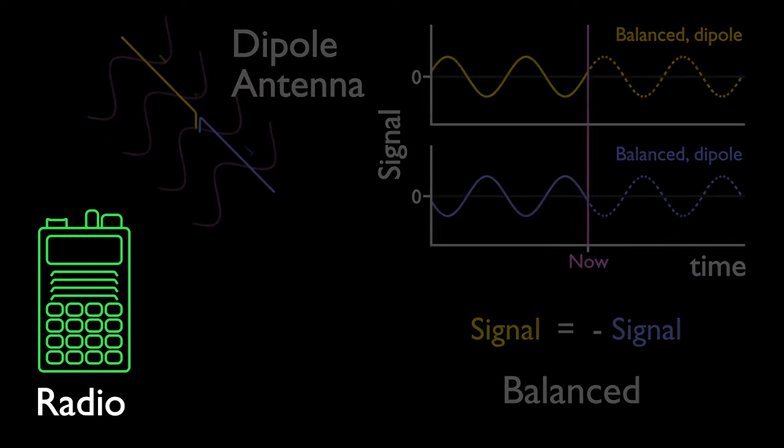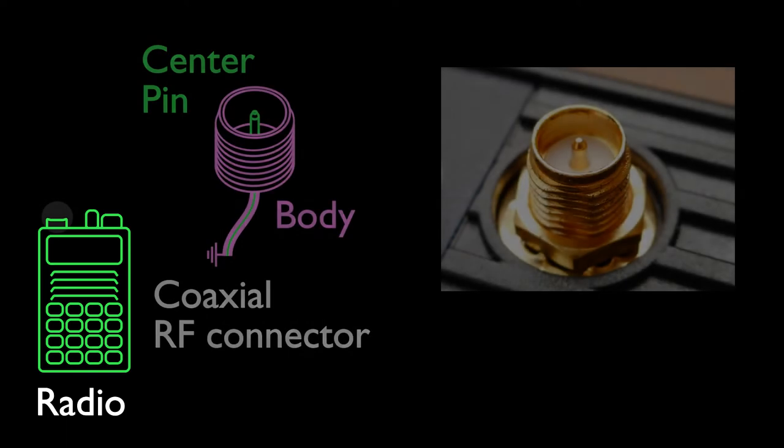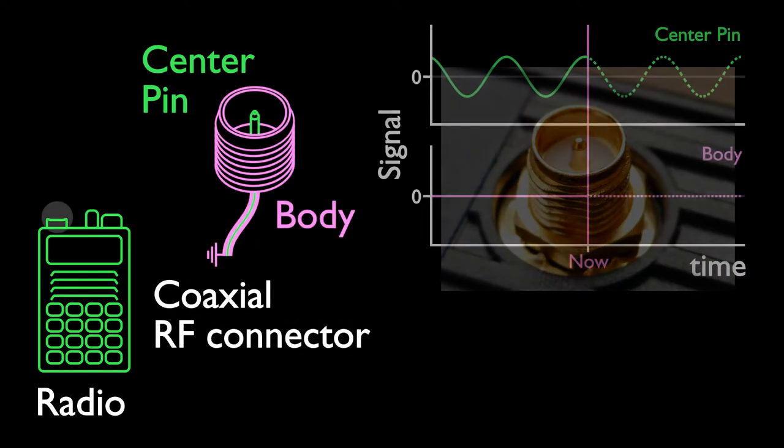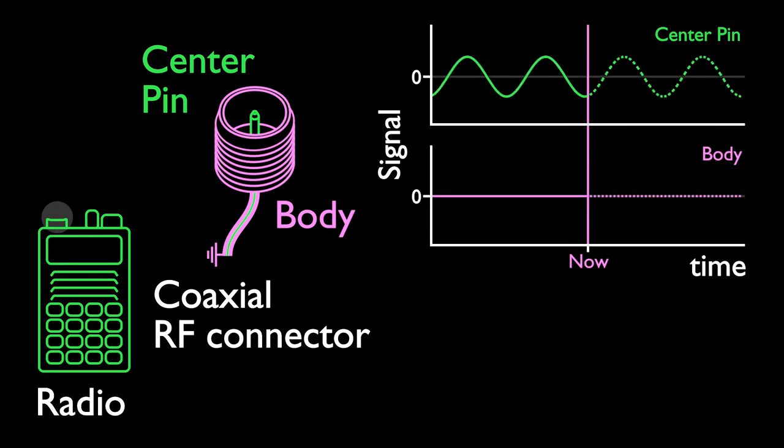But the radio expects something else. It connects through a coax. In the coax, the central conductor takes all the signal and the shielding gets nothing. Thus it acts as a zero reference.